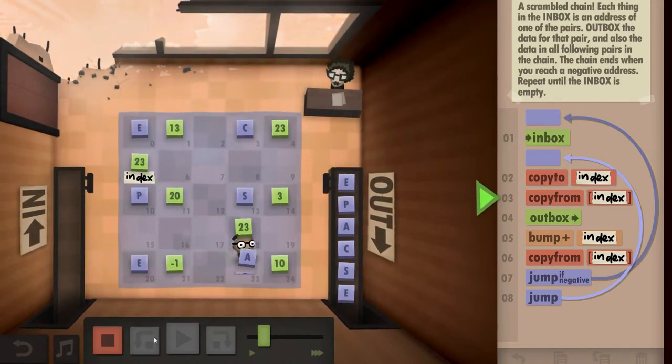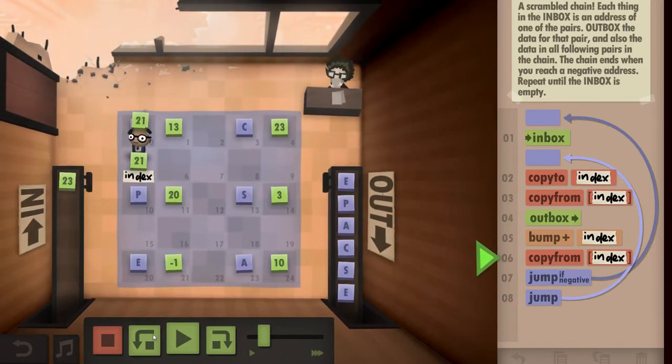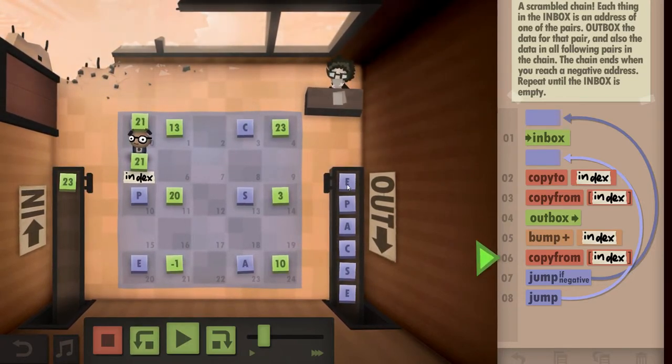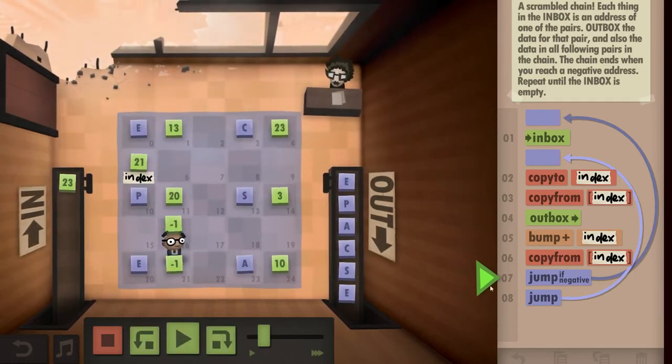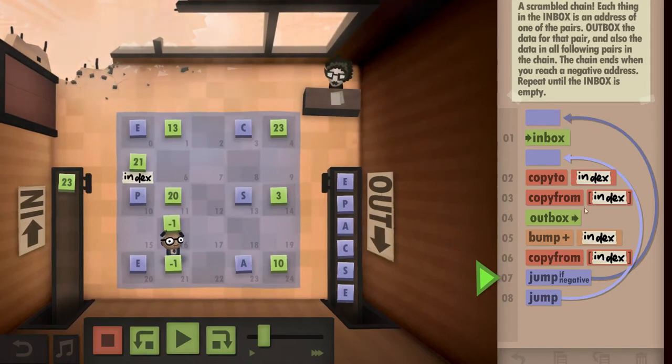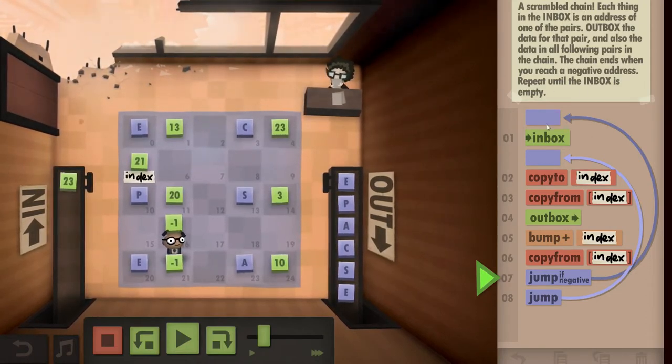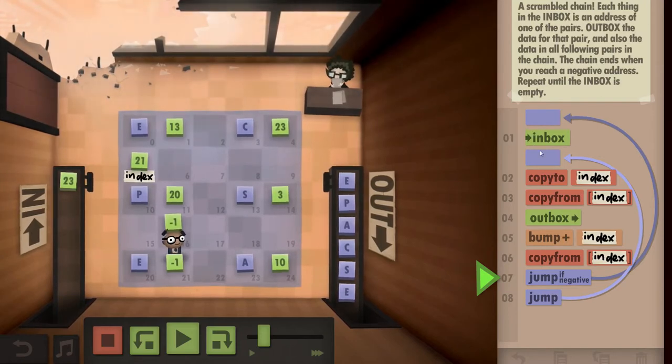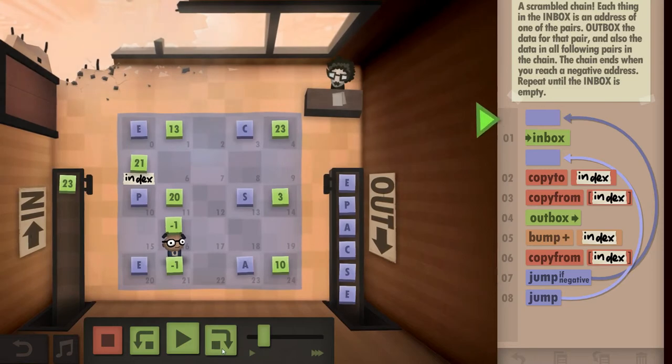So now we hit, that's maybe a little bit interesting. So once we hit, once we outbox the E, we get 21 as our address, which brings us here, which is this case, jump if negative. So the instruction said that once we hit a negative index, we are supposed to stop or, well, take the next input and that's what we do here. We check for jump if negative and then go right back to the start.